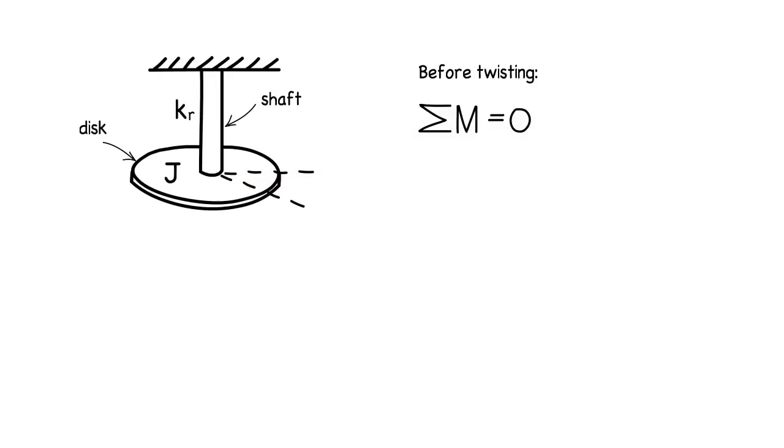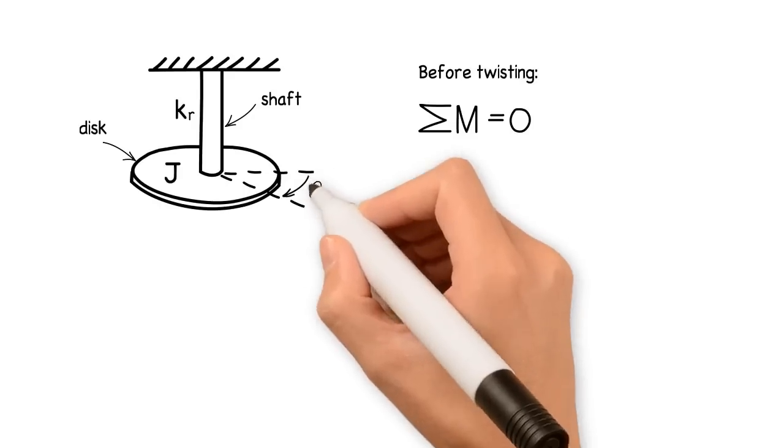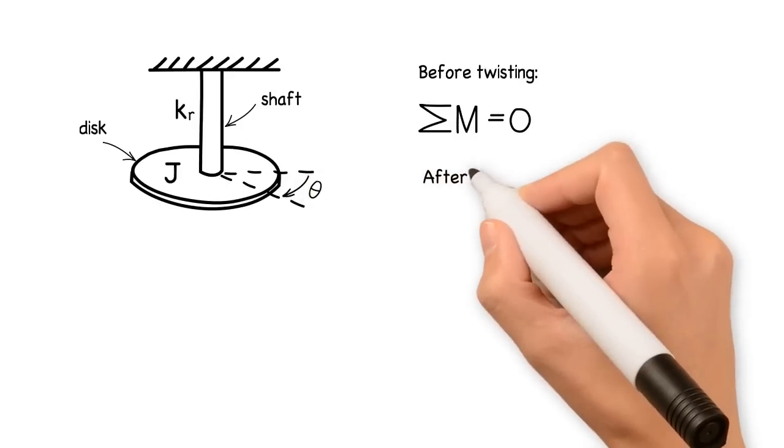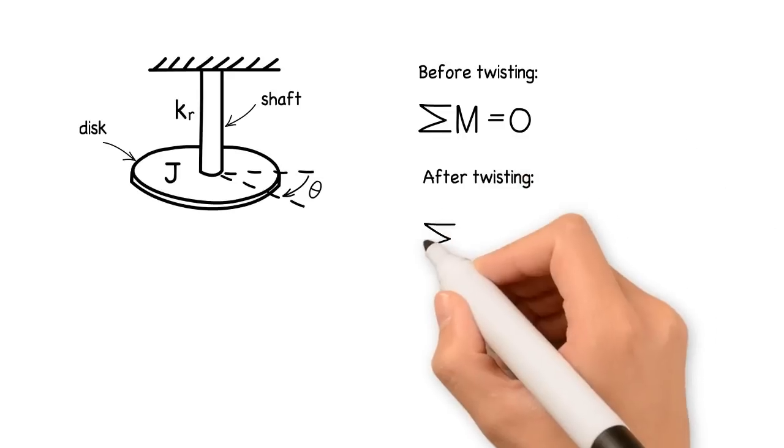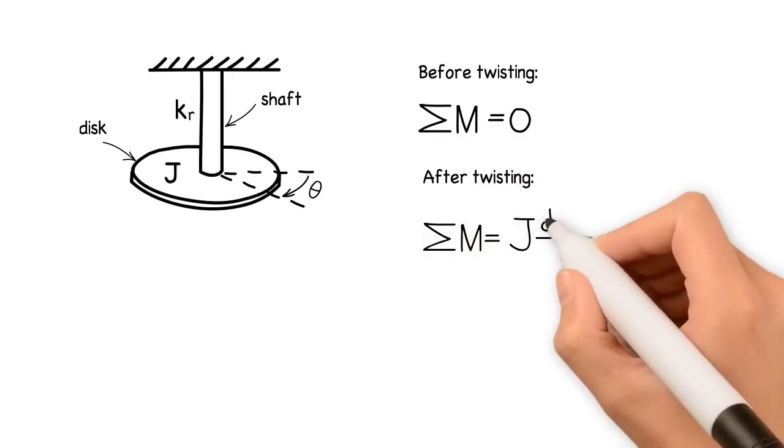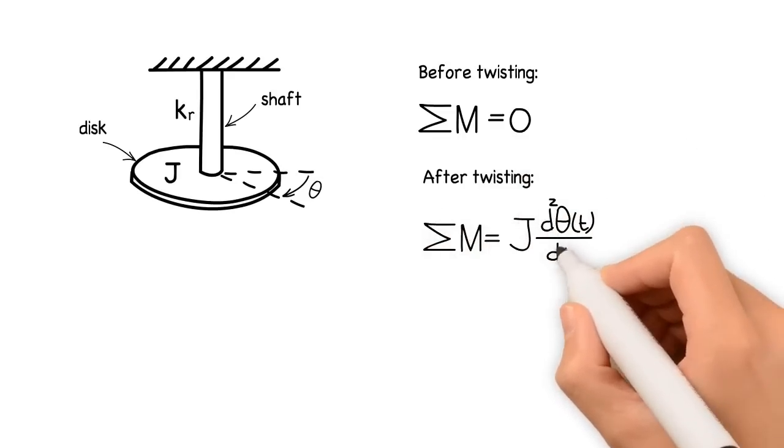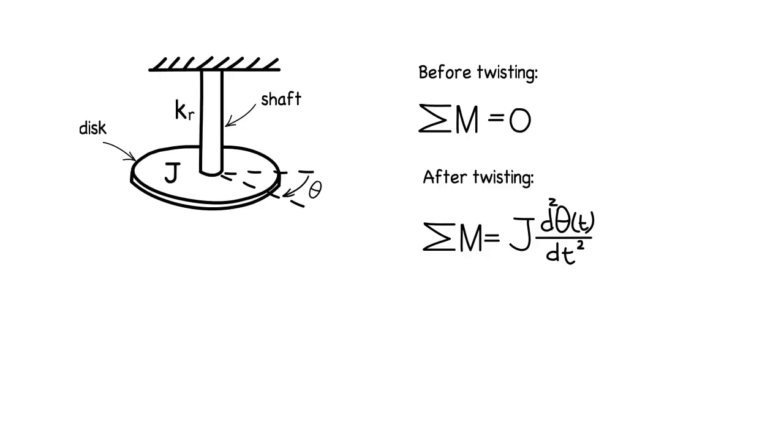Now let's twist the disc by theta and let it go to set it into motion. The resultant moment now is J d² theta over dt², which is the second mass moment of inertia times the angular acceleration of the disc, and again this one we can denote as J theta double dot.